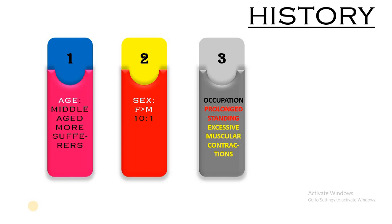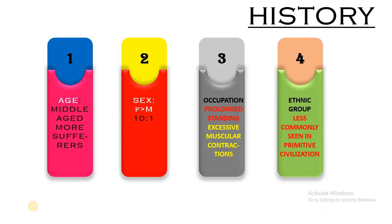Varicose veins may also occur in individuals involved in excessive muscular contractions, for example rickshaw pullers and athletes. So occupation is a very significant cause behind the development of varicose veins. Next is ethnic group — varicose veins are less commonly seen in primitive civilizations, for example among the poor in Africa and the Far East.